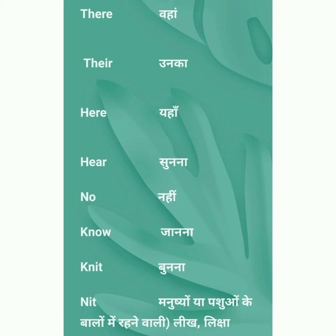The first homophones we always mix up: T-H-E-R-E, 'there', means 'wahan' (over there). And T-H-E-I-R, also 'there', means 'unka' (their). H-E-R-E, 'here', means 'yahan' (here). And H-E-A-R, also 'here', means 'sunna' (to hear). N-O, 'no', means 'nahi' (no). And K-N-O-W is also 'no', which means 'janna' (to know).